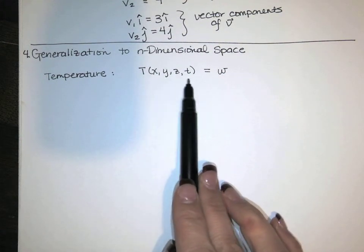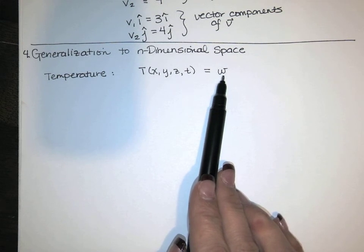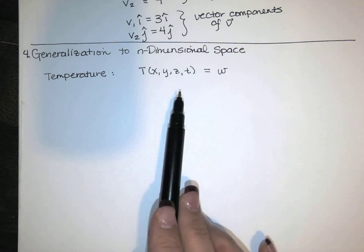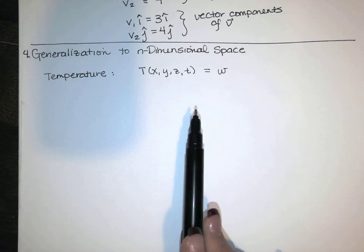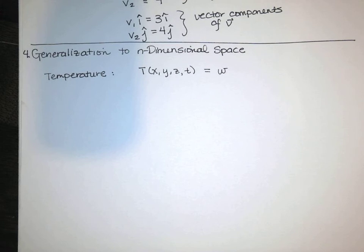So if I want to graph it, I have to be in five-dimensional space. You can't really do that, because we can't see beyond three dimensions.